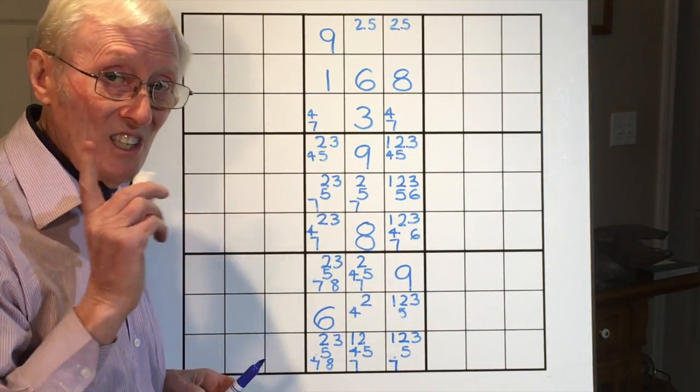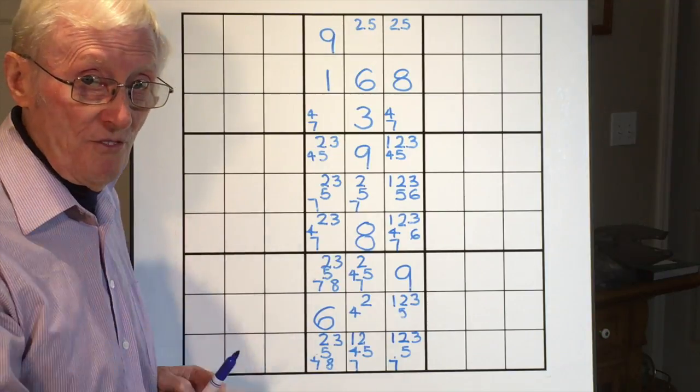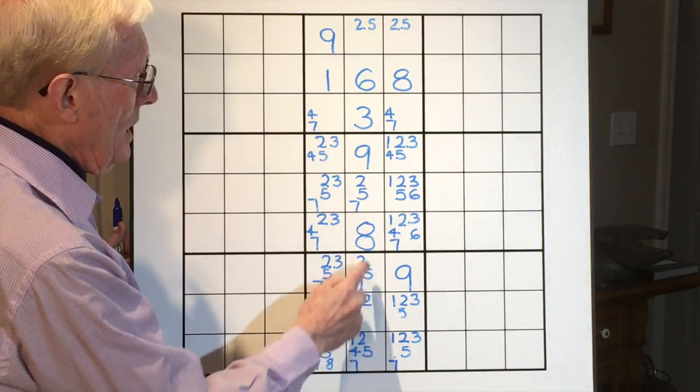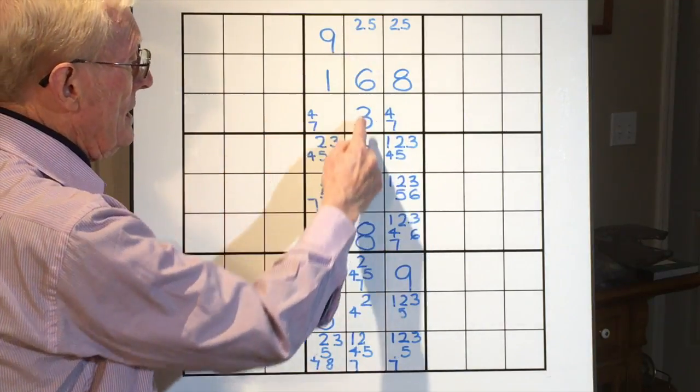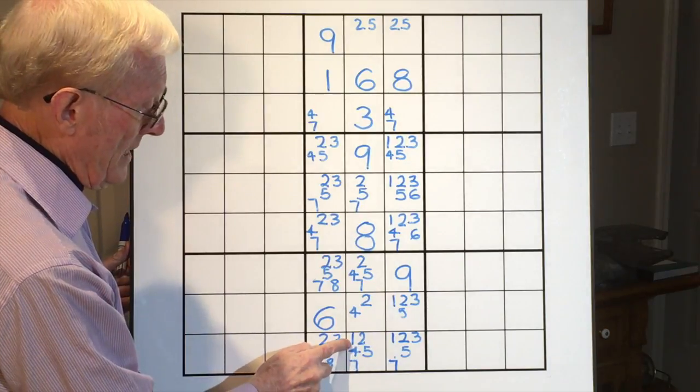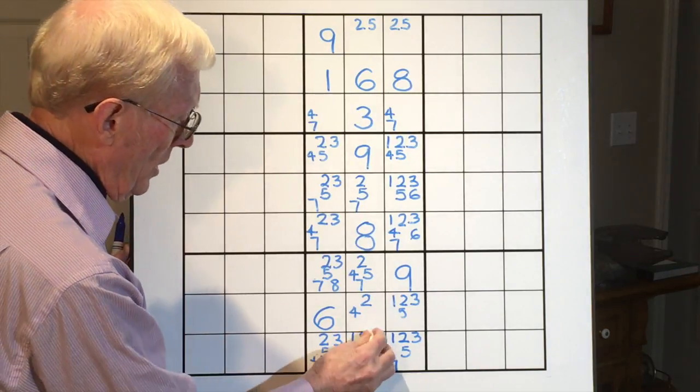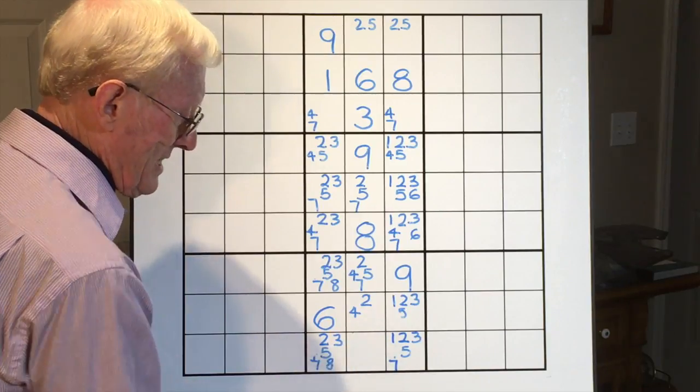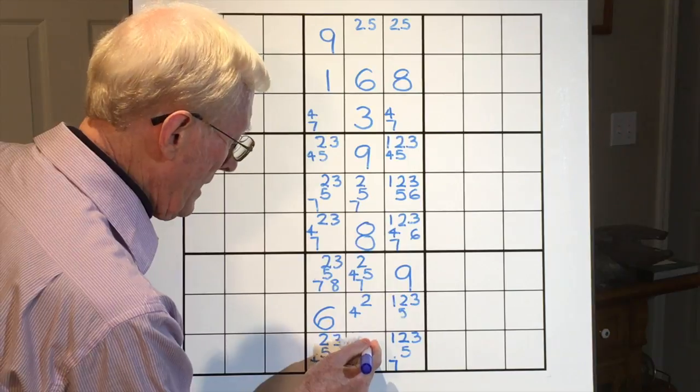I've suddenly noticed another little thing. I can finish this tutorial off by showing you this. If you look at this column, there is only one place you can see a one. There it is, right there. Therefore, you can take all those little numbers out. Oh, that gets nice when that happens. And you can put a nice big one in.